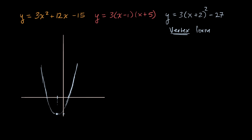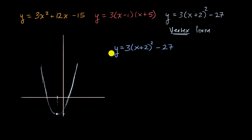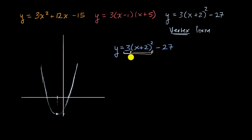How do we do that? We just have to appreciate the structure in this expression. We have y is equal to three times x plus two squared minus 27. The important thing to realize is that this part of the expression — x plus two squared — is never going to be negative. No matter what you have, if you square it, you're never going to get a negative value. And since we're multiplying it by a positive, this whole thing is going to be greater than or equal to zero.